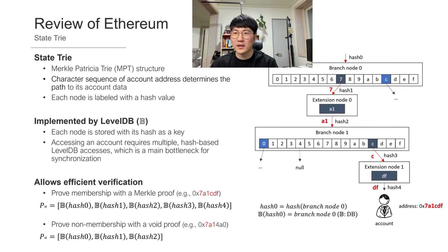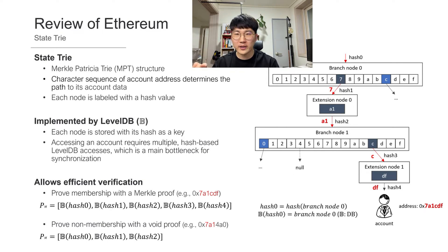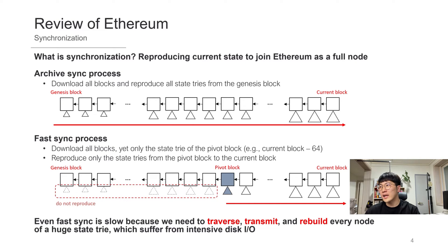This technique allows blockchain to implement layer 2 solutions, which are solutions for scalability. Users can do something in layer 2, and that data is summarized to a root of a Merkle Tree, and the root value is transmitted to the main chain so that the main chain can verify any action that occurred in the layer 2 solutions. If a new node wants to join the network, it has to become a full node by downloading the blocks and reproducing the current block — called synchronization. A full node can verify a transaction itself because it has the full data of the state trie and can access any state of any account.